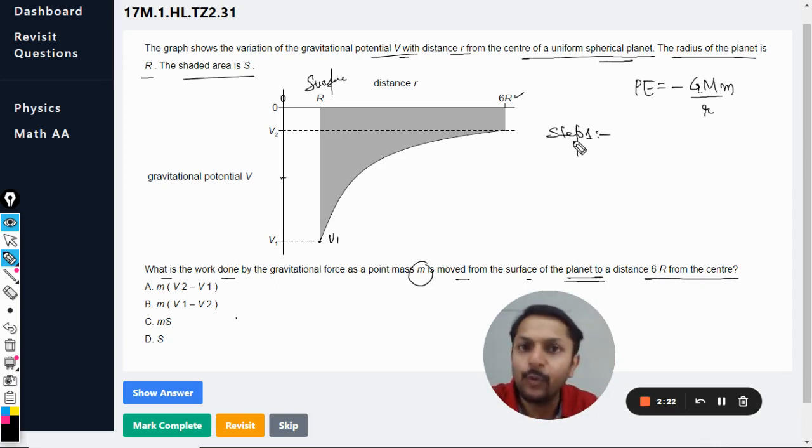My students, I have told you in these kinds of questions, first of all step one is find the change in potential, which is the final minus initial. So what is the final potential? It is V2. The initial potential is V1.